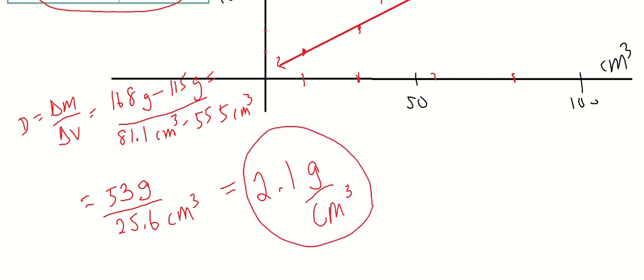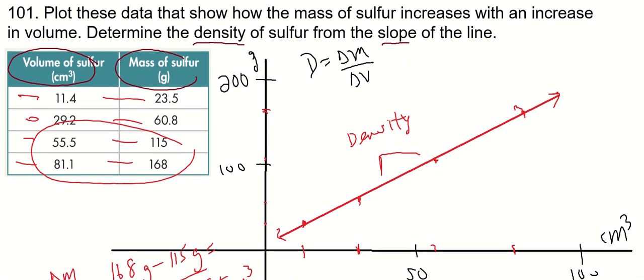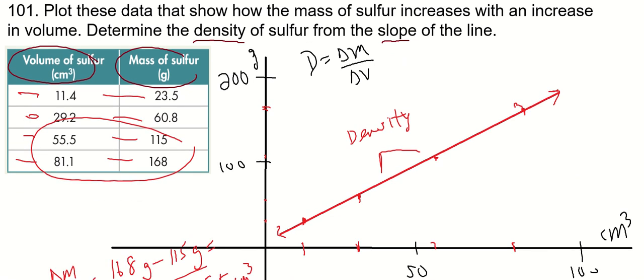Now, you could have picked any two numbers on that table. I'm sure you get the same answer, but I'm just following directions here, determining the density from the slope.